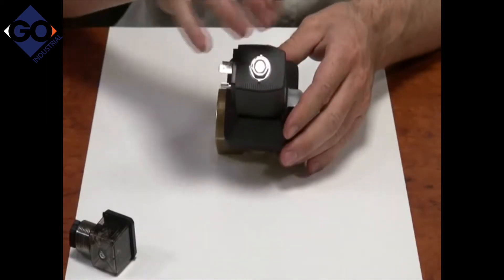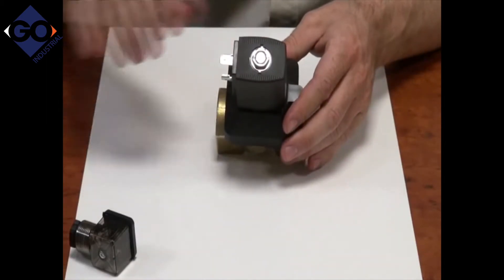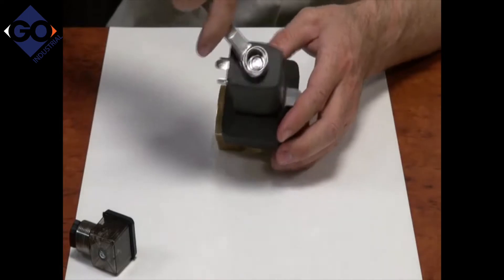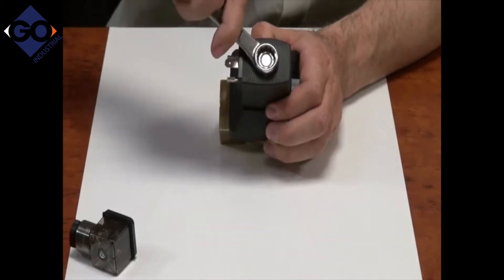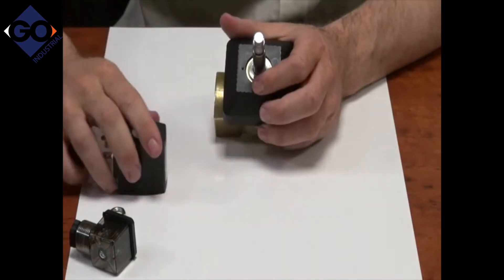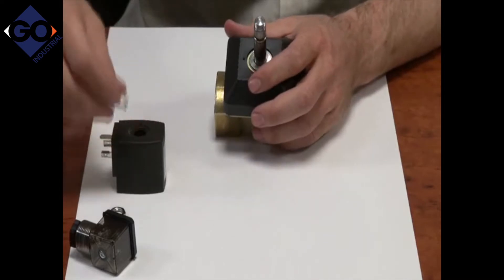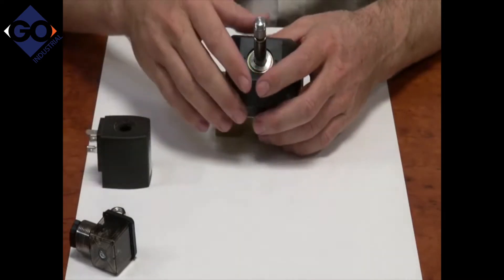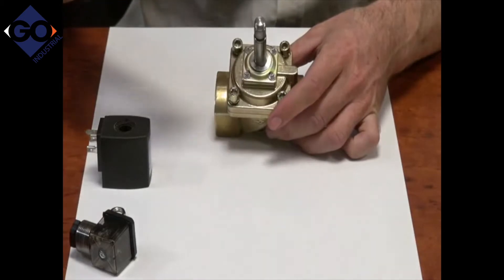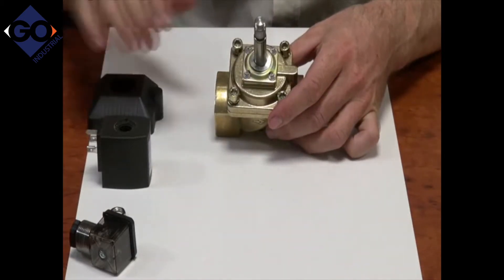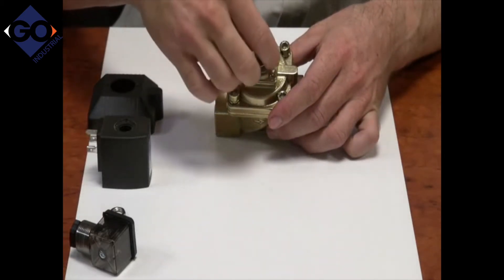Next is the coil. This is where the electromagnetic field is created. Just loosen the nut on the top and take the shroud off. Sizes up to one inch have the shroud. Bigger than that don't have a shroud.